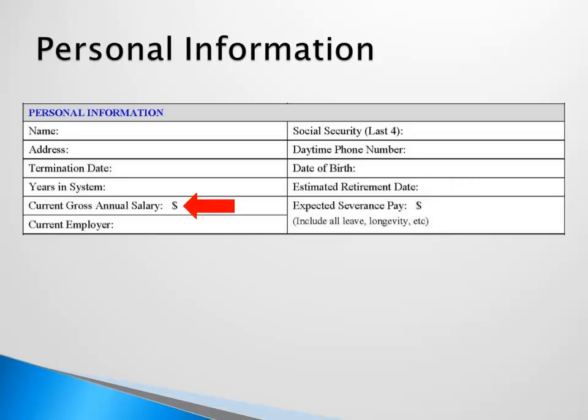For Current Gross Annual Salary, if you are vested before 12-31-2011, provide your current annual salary and enter any expected severance in the next box. If you are not vested before 12-31-2011, provide your current annual salary and leave the severance box empty. Enter your current employer if you are currently working, or who your employer was when you left NHRS-covered employment.